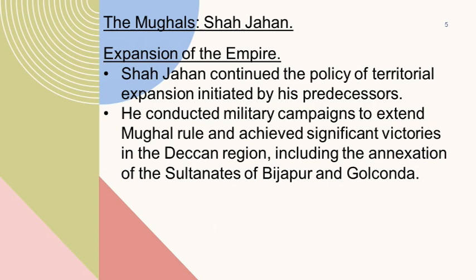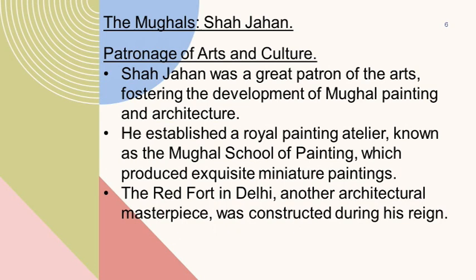Shah Jahan was a great patron of the arts, fostering the development of Mughal painting and architecture. He established a royal painting atelier, known as the Mughal School of Painting, which produced exquisite miniature paintings. The Red Fort in Delhi, another architectural masterpiece, was also constructed during his reign.